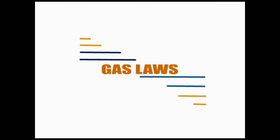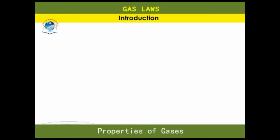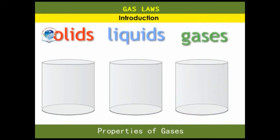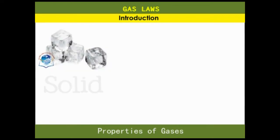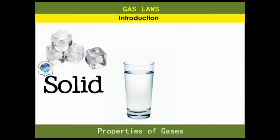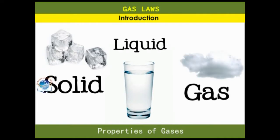Chapter 1: Gas Laws. We learned about the three states of matter in Form 1 and the arrangement of particles in each of the states. Most substances can exist in any of three states depending on temperature and pressure. In this chapter we shall focus on the behavior of gases when subjected to various conditions.